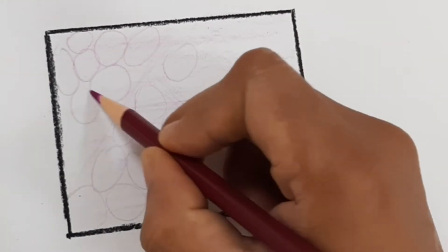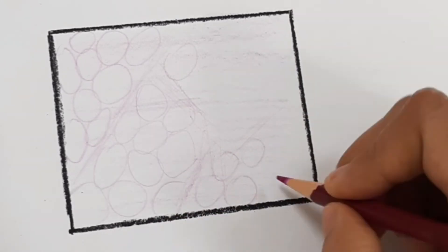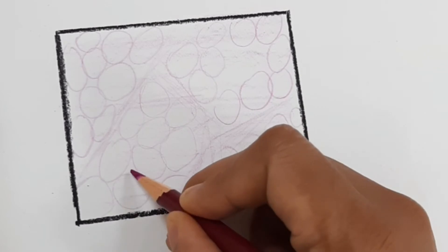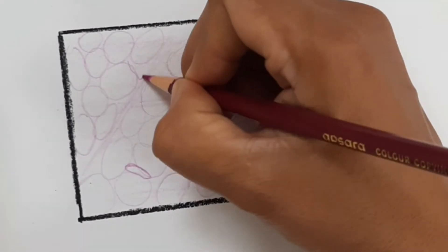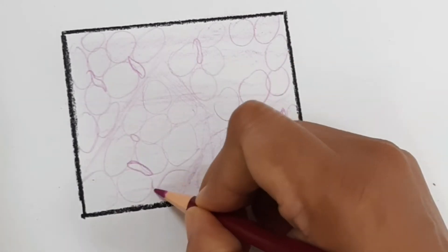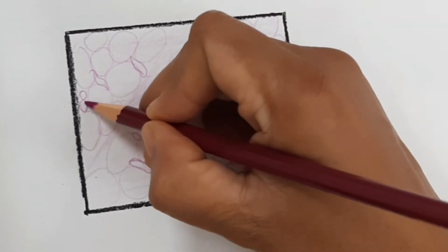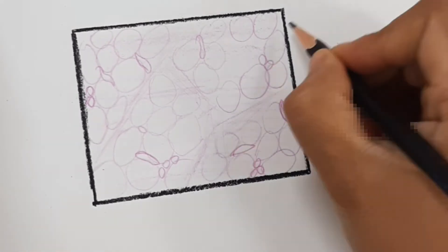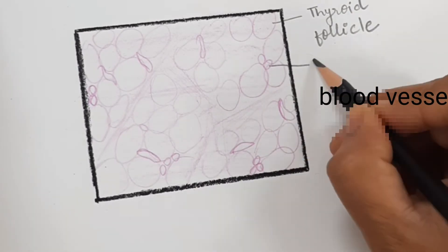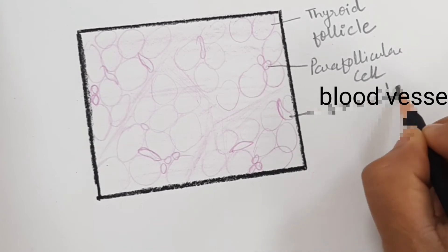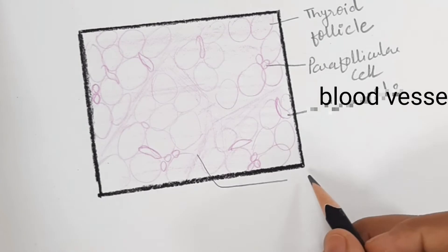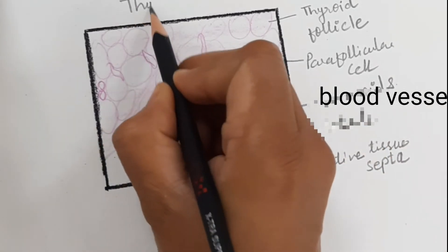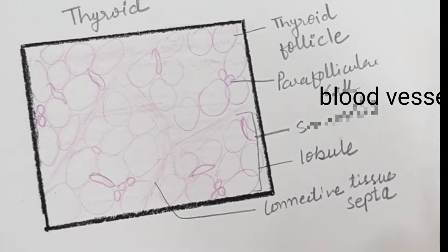Within the lobules there are follicles — rounded structures, with millions of follicles present. Each follicle contains follicular cells peripherally. Within the follicle there are blood vessels and also parafollicular cells that lie between the follicles. It is an endocrine gland, so it is a highly vascular gland, and connective tissue septa divide it into lobules.